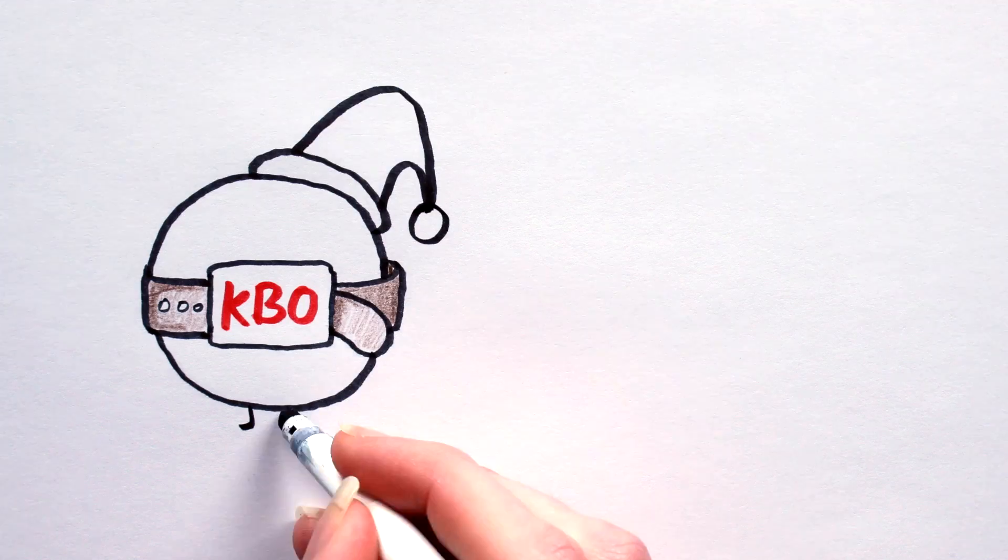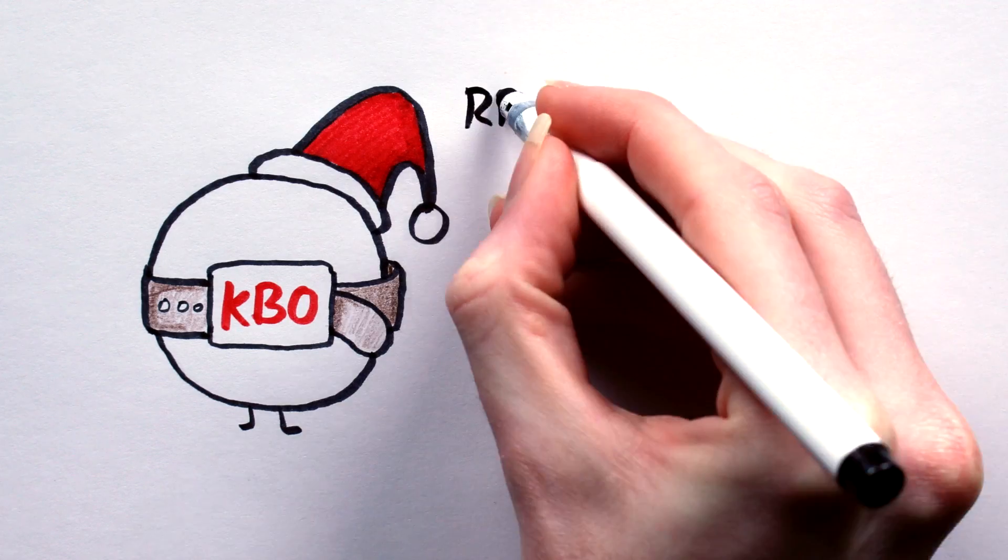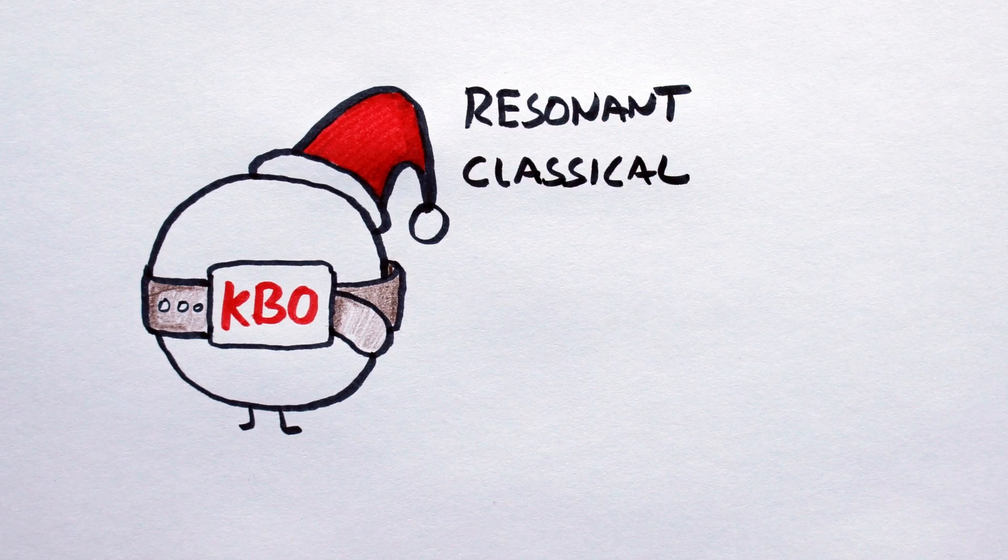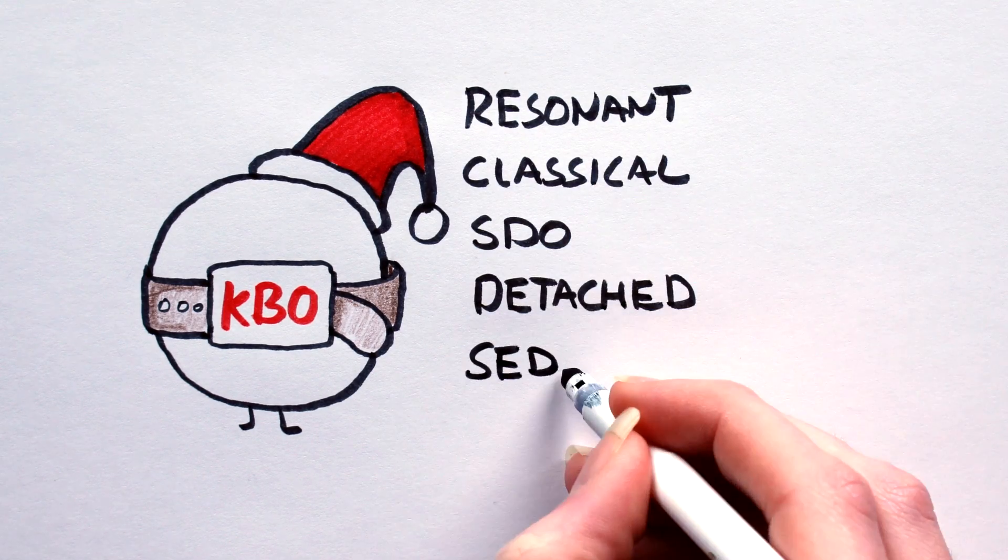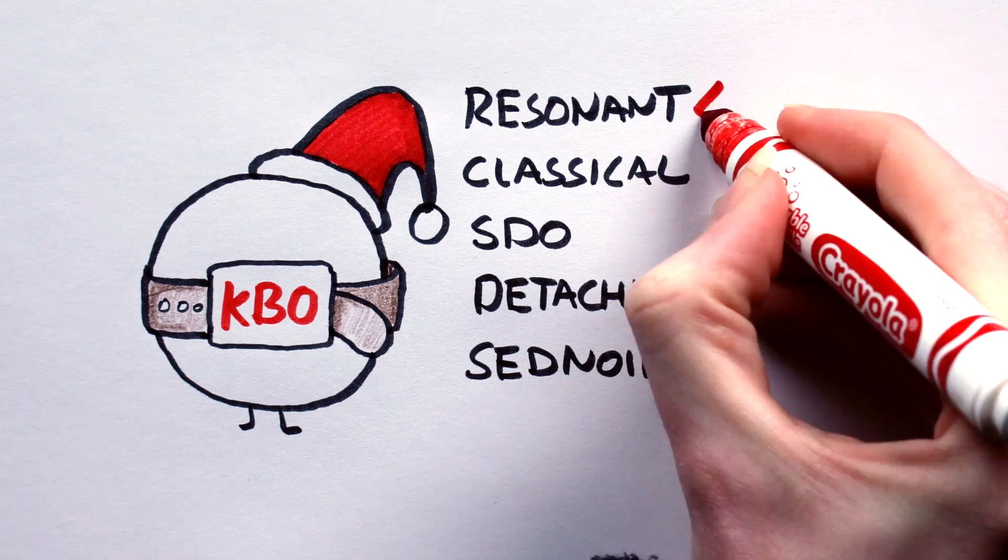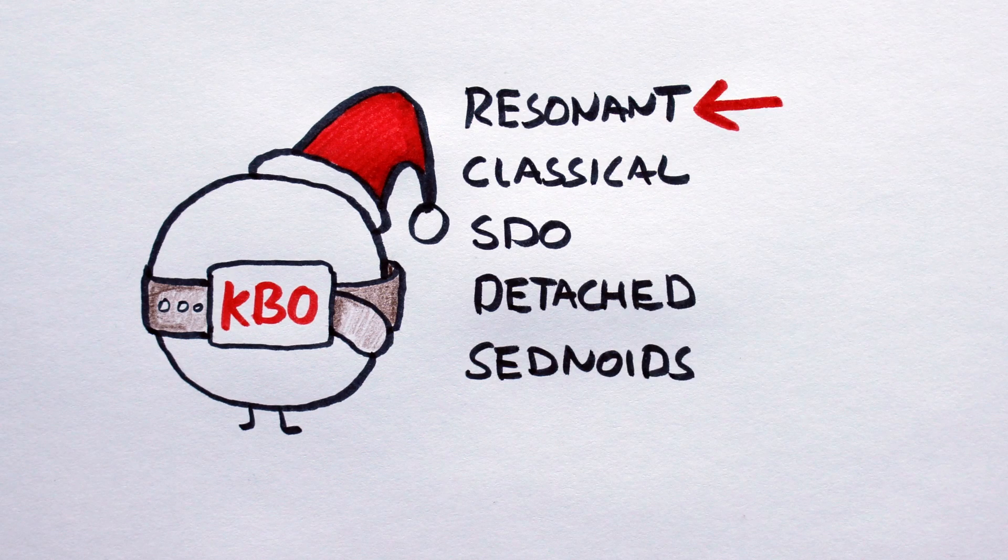Kuiper Belt objects come in five distinct dynamical classes: resonant objects, classical Kuiper Belt objects, scattered disk objects, detached objects, and finally, sednoids. In this video, let's look at building an orbit for a resonant Kuiper Belt dwarf planet.